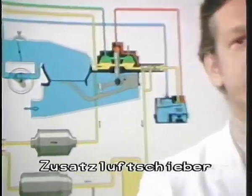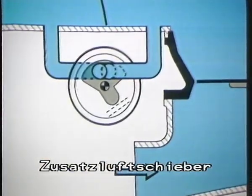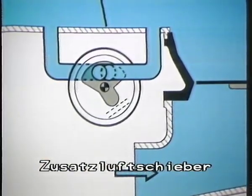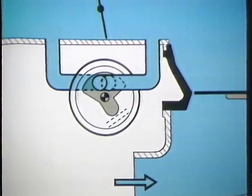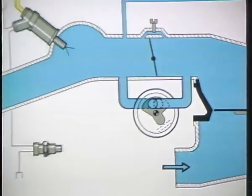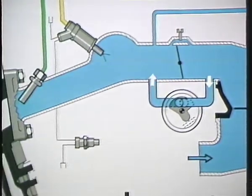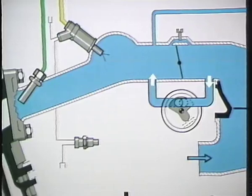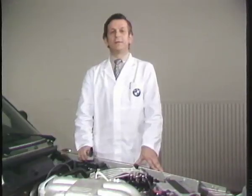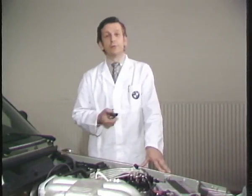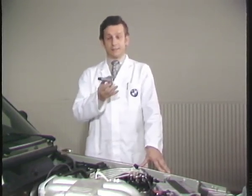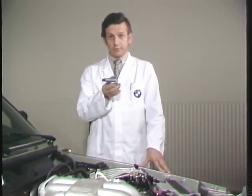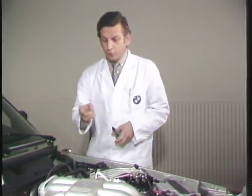Und nun der Zusatzluftschieber. Er leitet bei kaltem Motor zusätzlich Luft unter Umgehung der Drosselklappe in den Ansaugkrümmer. Er gleicht damit die erhöhten Reibungsverluste des kalten Motors aus und hebt die Drehzahl an. Der Zusatzluftschieber wird in zwei Ausführungen verbaut: als elektrisch gesteuerte oder als kühlmittelgesteuerte.